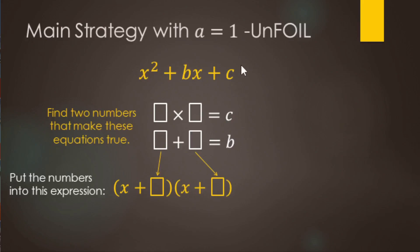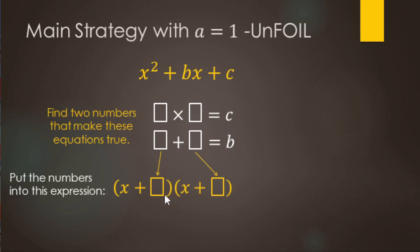When we talk about a equals one that means you have one x squared — there's no number in front of your x squared. The main strategy for this style of factoring or unfoiling looks like this: find two numbers that multiply to the constant term (the c term or last term) and those same two numbers add to your middle term (the b term or x term). Our answer is going to look like x plus or minus the first number in parentheses, then x plus or minus the second number.